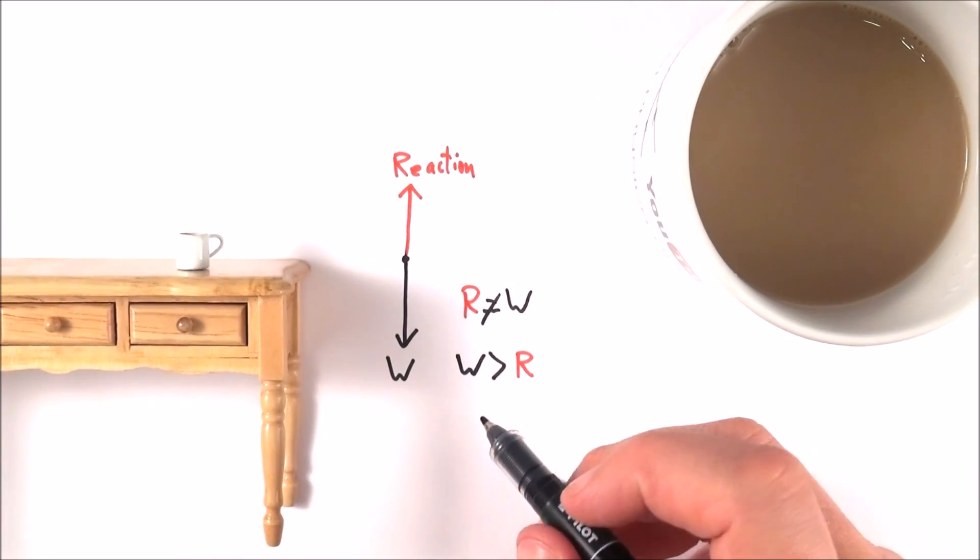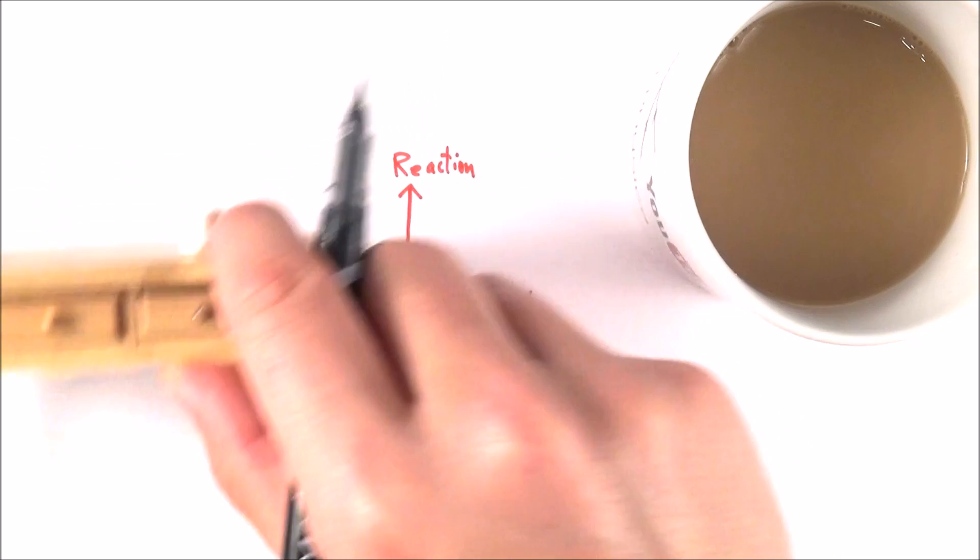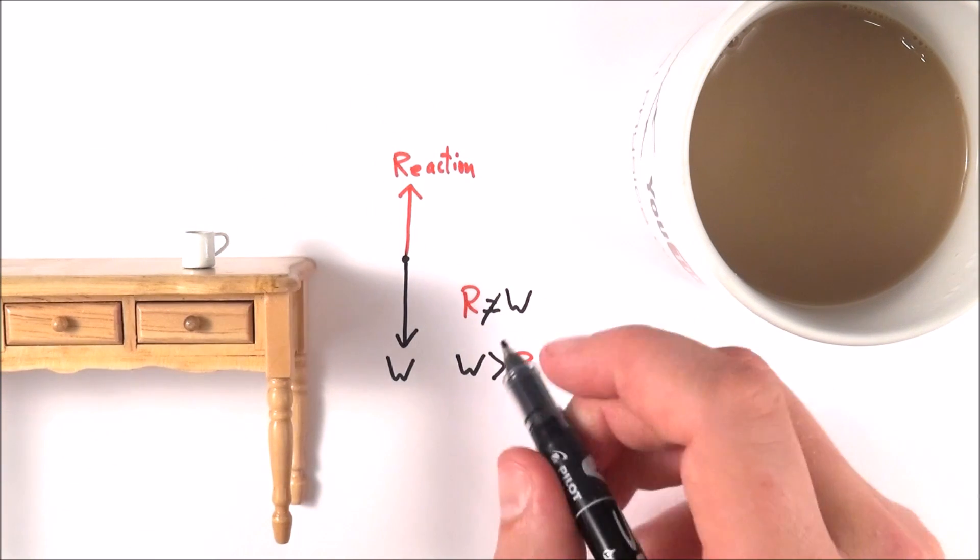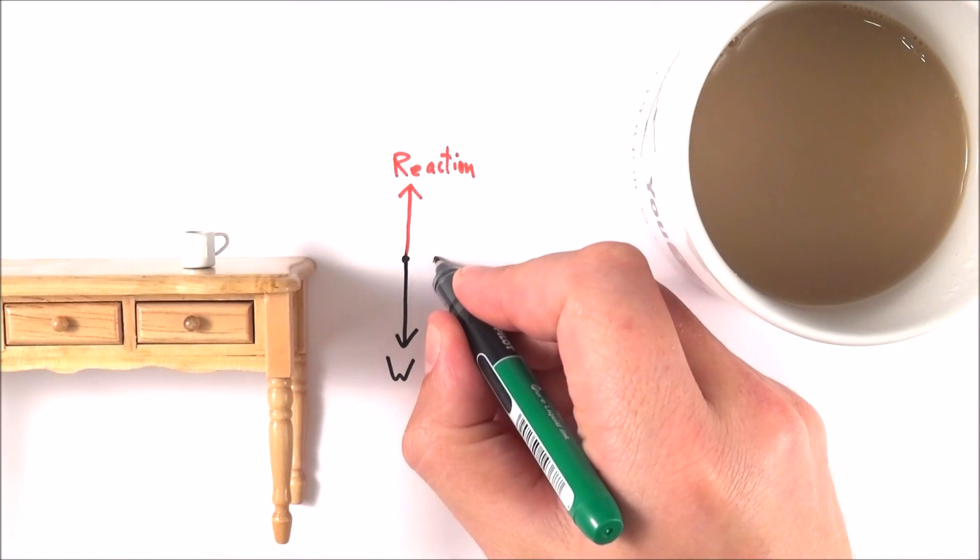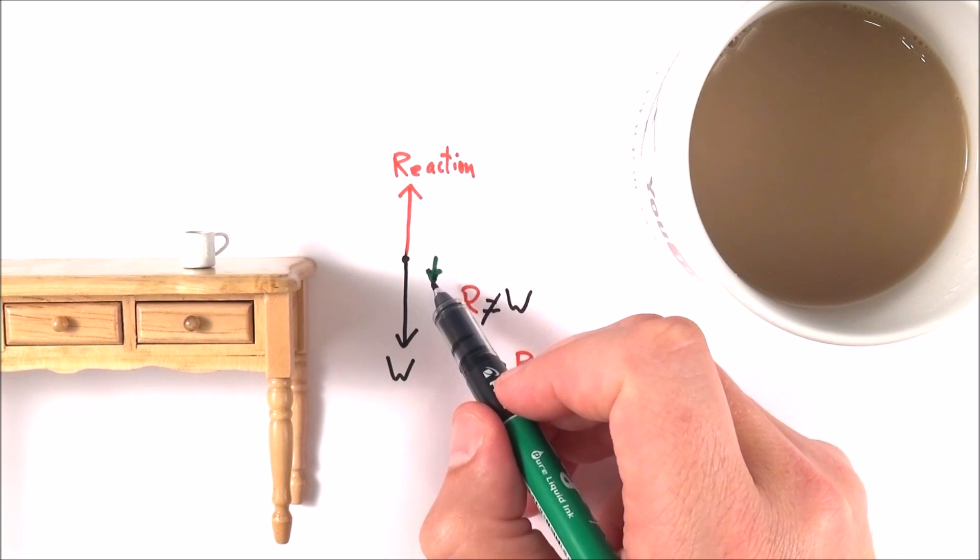That means there needs to be a centripetal force which is acting inwards that stops this moving off into space. So because the weight is bigger than the reaction, that means when we look at these two forces, there's effectively a net force which is acting downwards. And it's this net force here which provides a centripetal force.